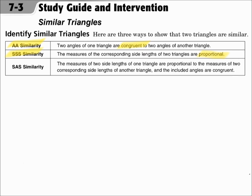And side-angle-side similarity: when the measures of two side lengths of one triangle are proportional to the measures of two corresponding side lengths of the other triangle, and the included angles are congruent. Remember, when you're talking about angles, they have to be congruent. When you're talking about side lengths, they have to be proportional.